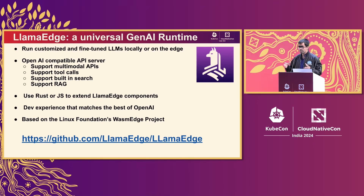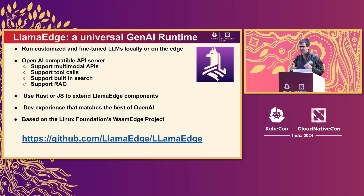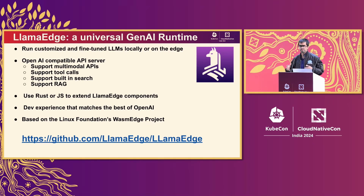LlamaEdge has been built on top of WasmEdge. It's a customized runtime that allows you to run WebAssembly workloads and specifically AI-powered workloads on the edge or locally. It provides an OpenAI-compatible server, so you no longer need to use OpenAI and manage thousands of dollars of requests or deal with the privacy concerns that come with cloud-hosted models. You can run all of that locally, and if your infrastructure was supporting OpenAI APIs, you can very easily just replace it with LlamaEdge.